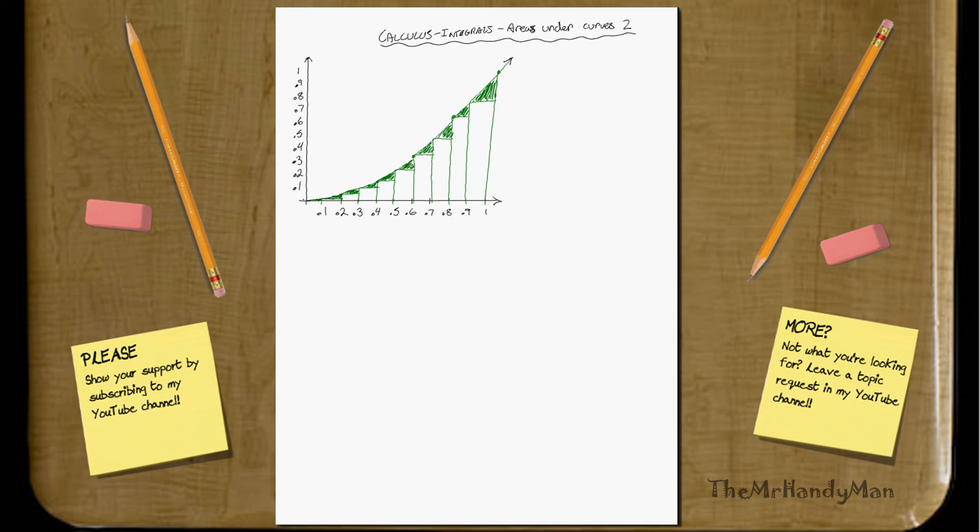And you'll see that basically, while these are still error, if you compare it to the last video, it is less. And the only difference that we have, this is the same function y equals x squared, the only difference that we have here is that our delta x is actually smaller.